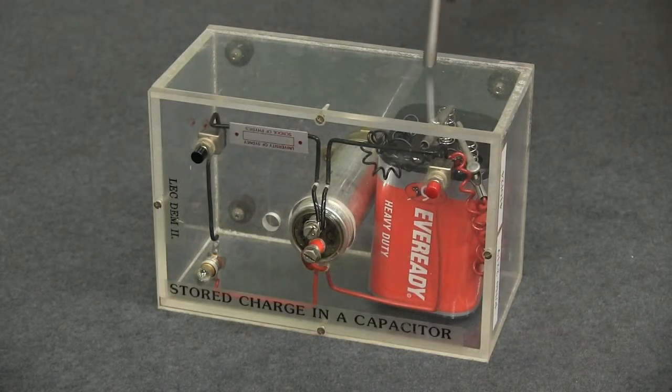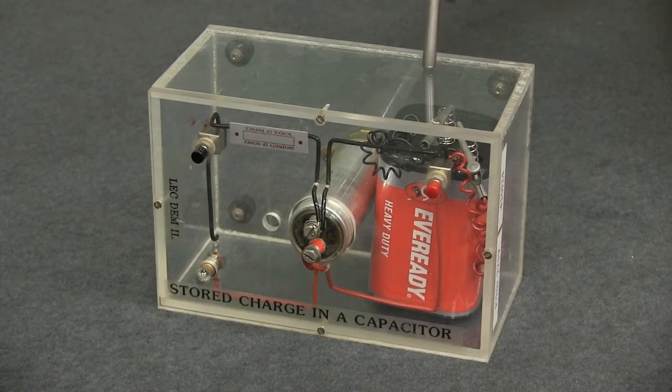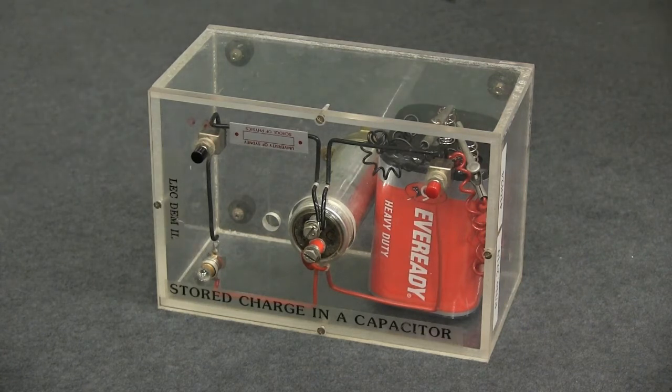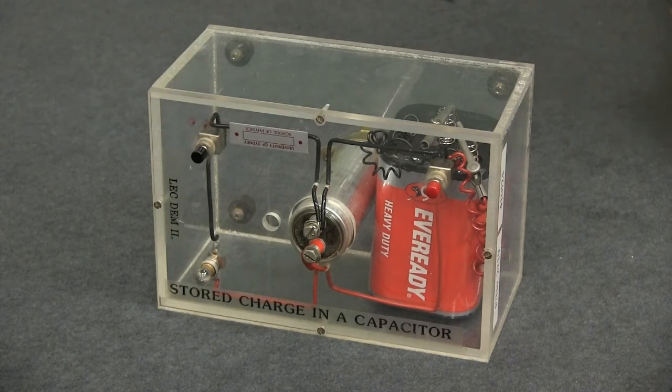We have a battery that supplies a current and down here we have a little lamp that lights up when there's current through it. Both of those are disconnected from the capacitor at the moment.